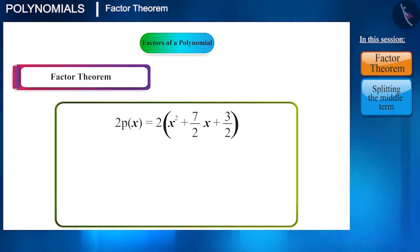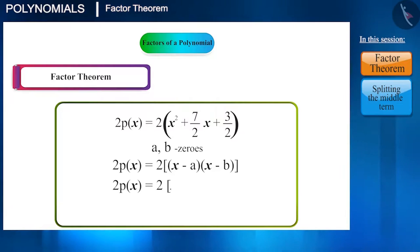And suppose, if a and b are its two zeros, then you can write this polynomial in terms of factors as 2P(x) = 2(x - a)(x - b). And here, you can see that the constant is ab. That is, for this polynomial, ab is 3/2.